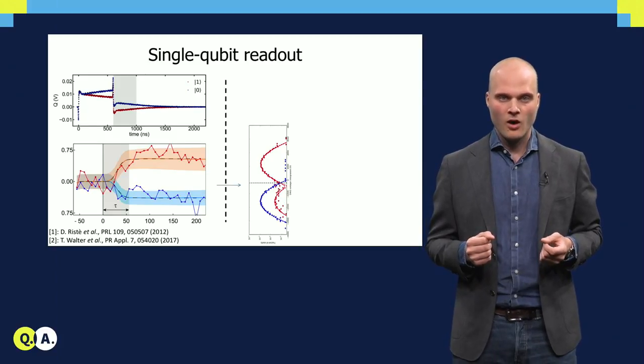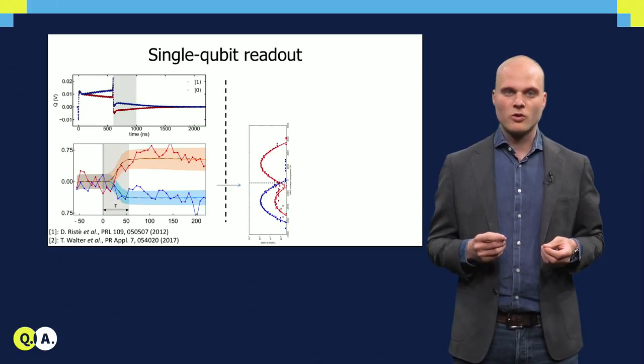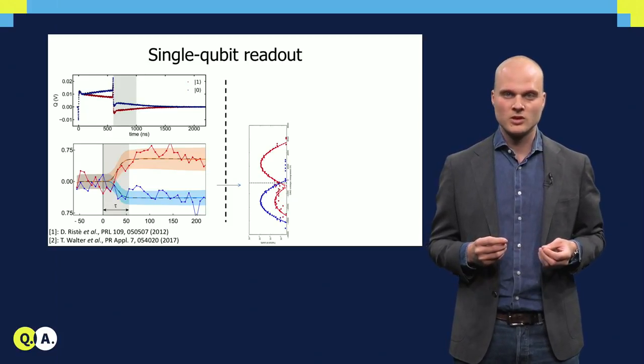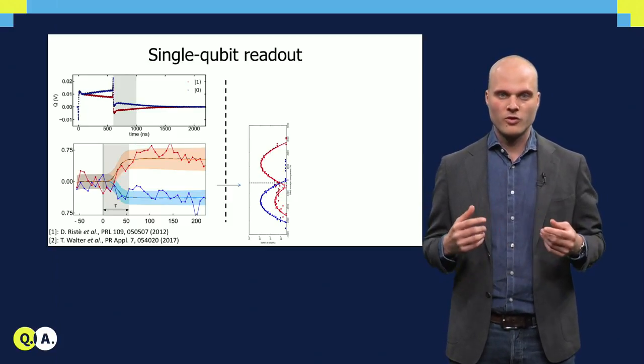To quantify how well qubit measurement is performing in the presence of this noise, we record the integrated voltage of thousands of individual traces. By plotting these individual shots in histograms, we extract the fidelity of the measurement.